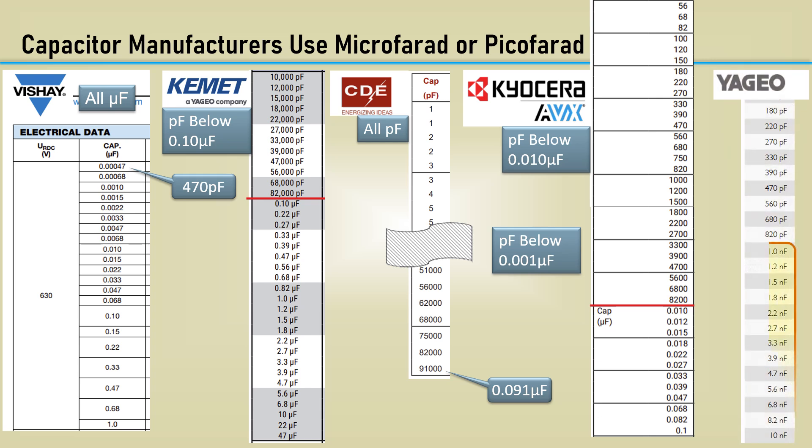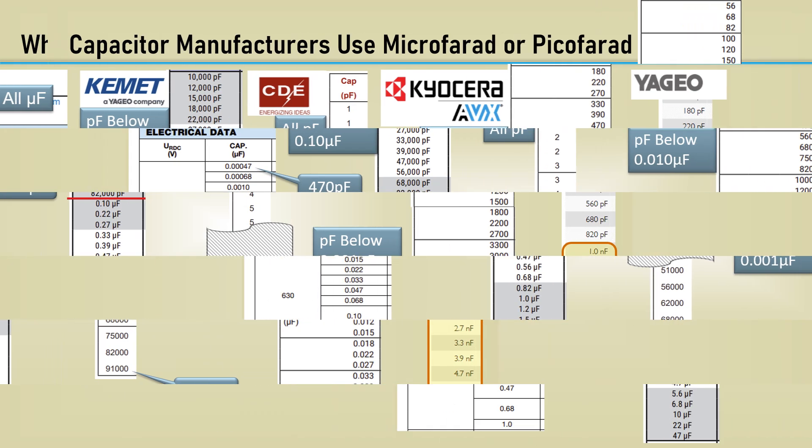After searching for a while, I finally found a data sheet with nanofarads. So, why only microfarads and picofarads?